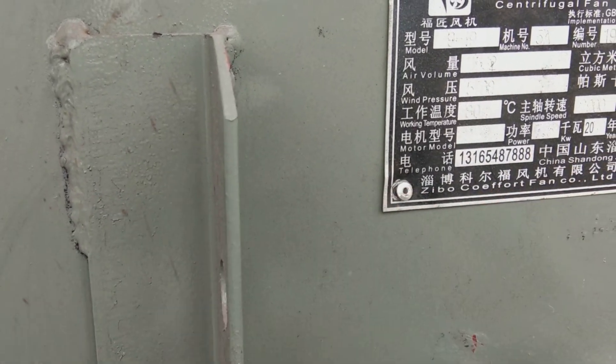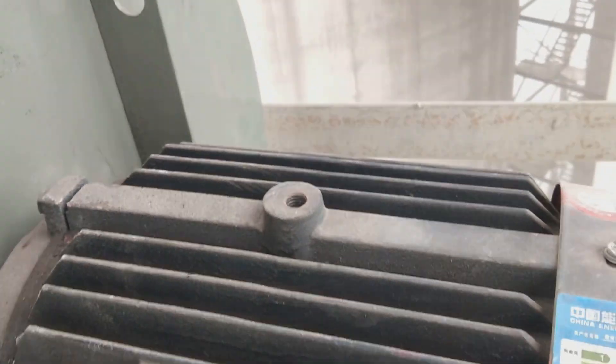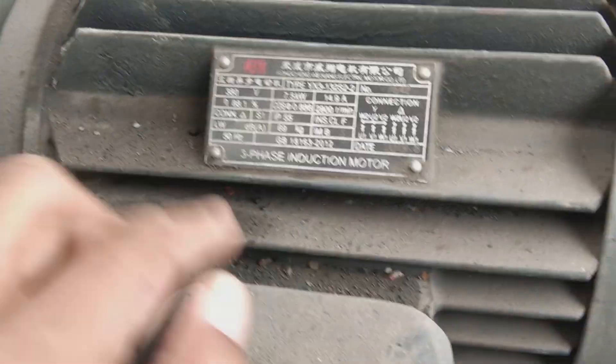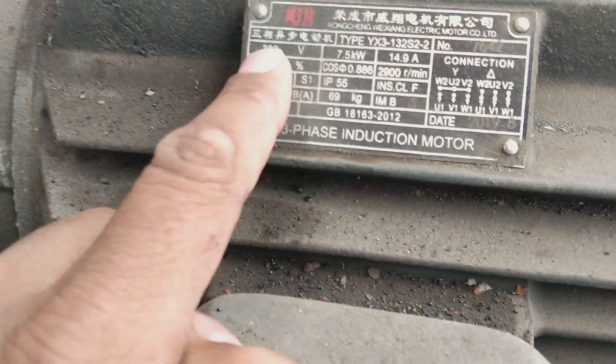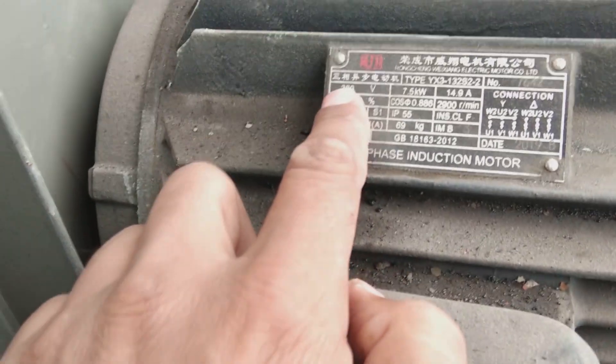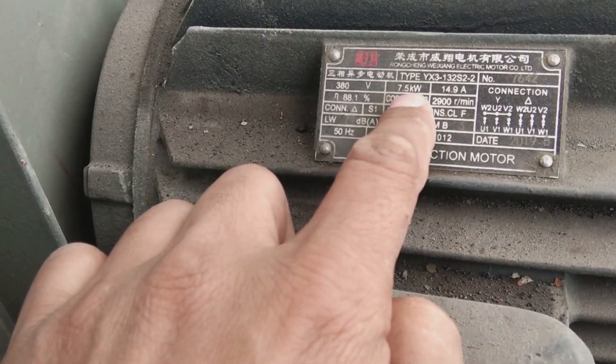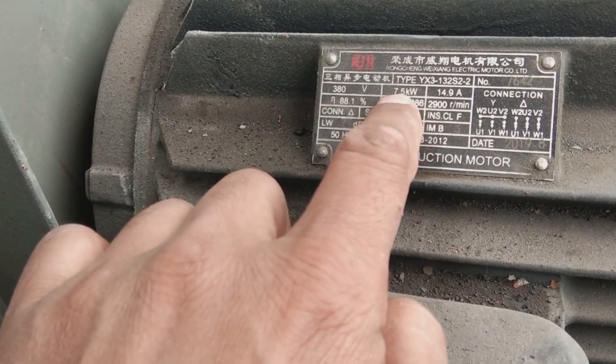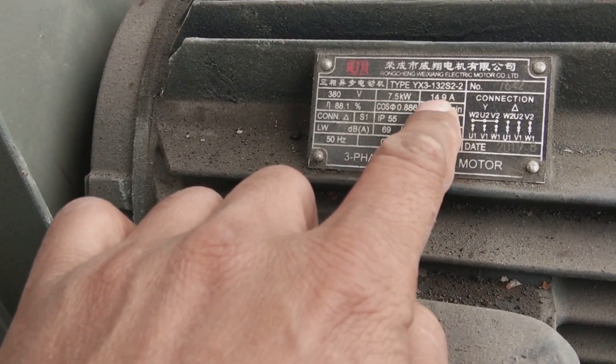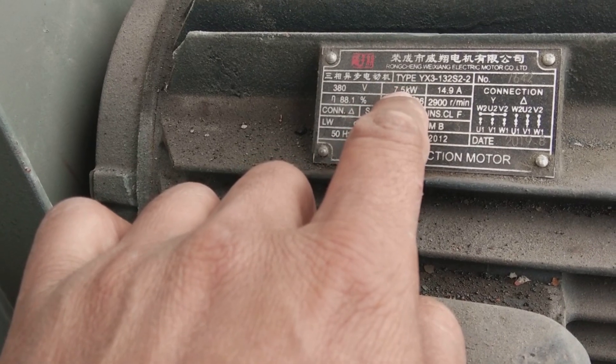Here's the motor part, which is electrical. This is a 380 volt low voltage motor, and it's star or delta connected. This is 7.5 kilowatt, and 14.9 ampere is the current.